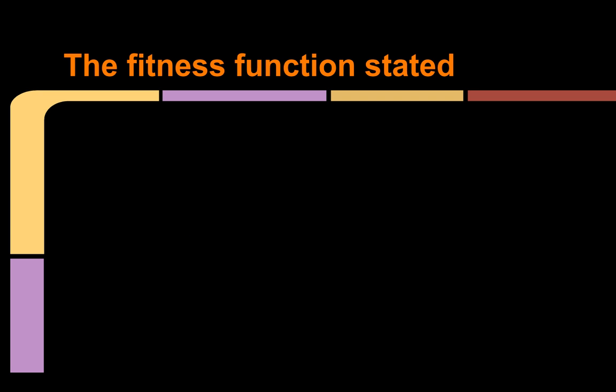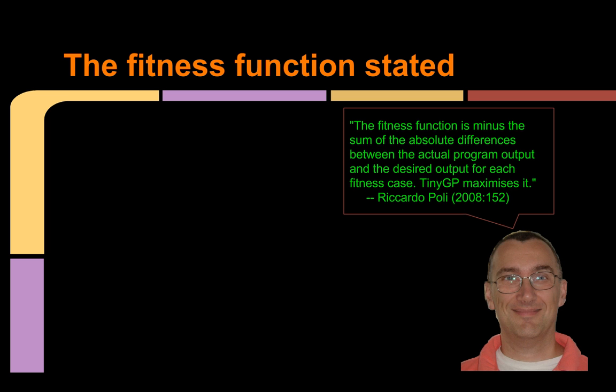Well to get started let's hear from Professor Poli himself on the matter of fitness. He writes, the fitness function is minus the sum of the absolute difference between the actual program output and the desired output for each fitness case. TinyGP maximizes it. That's sort of dense doc, let's break it down a bit.